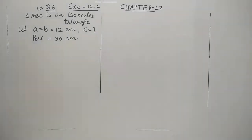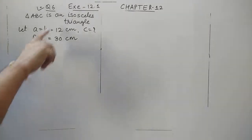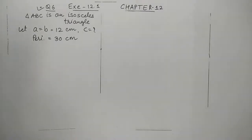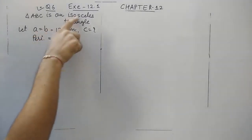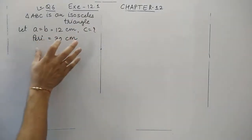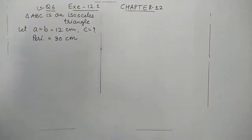Let us continue with the last question of this exercise. We can correlate this with question number 4. It is given that in an isosceles triangle, the perimeter is 30 and each of the equal sides is 12. Find the area of the triangle. Since 2 equal sides are 12 each, we need to find the 3rd side and the perimeter is given.